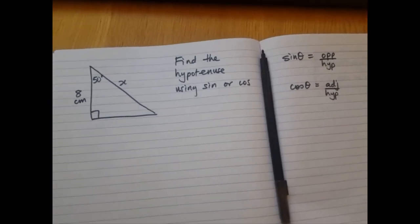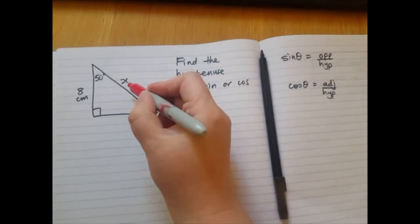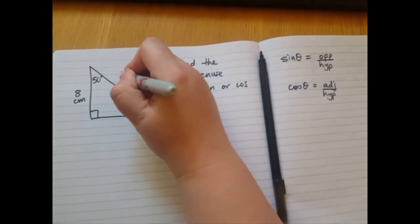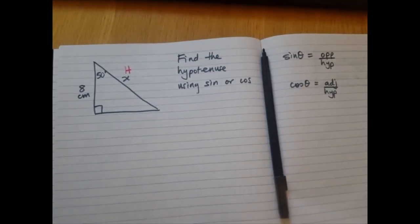Step one, we're going to label the sides. So this side is the longest side. That's the hypotenuse. I'm going to call it h.